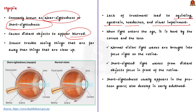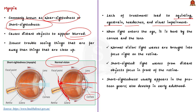What causes myopia? Have a look at this figure — the right side displays normal vision. Light enters the eye and passes through the cornea and lens. The cornea is a clear layer in front of the eye. The light gets bent as it passes through the cornea and lens, and in normal vision, the light is brought into focus right on the retina — a layer at the back of the eye.